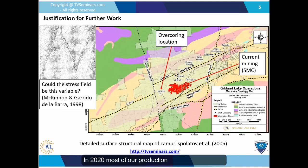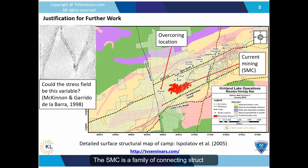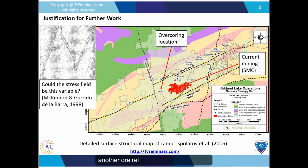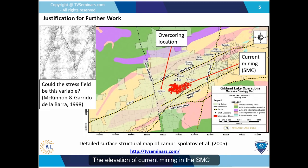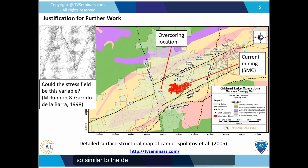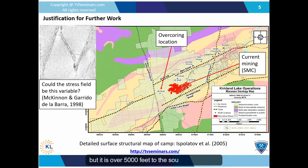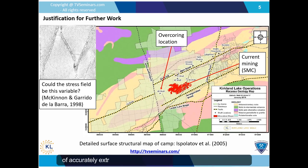In 2020, most of our production comes from an area called the South Mine Complex, or SMC. The SMC is a family of connecting structures between the 04 break and the amalgamated break, another ore-related structure to the south. The elevation of current mining in the SMC is between 5,000 and 5,800 feet deep, similar to the depths of the over-coring measurements, but it is over 5,000 feet to the southeast of them. We felt that we were reaching the limit of accurately extrapolating our point measurements of in-situ stress.